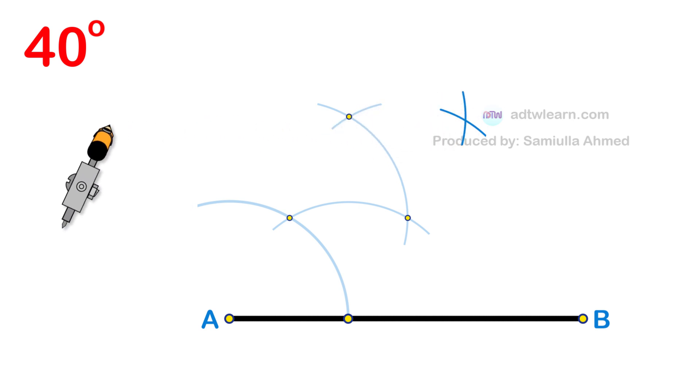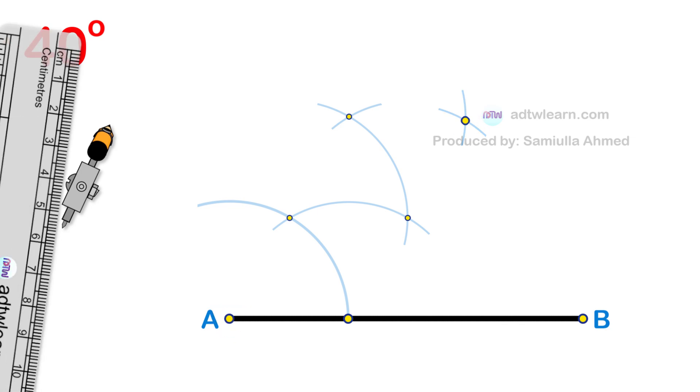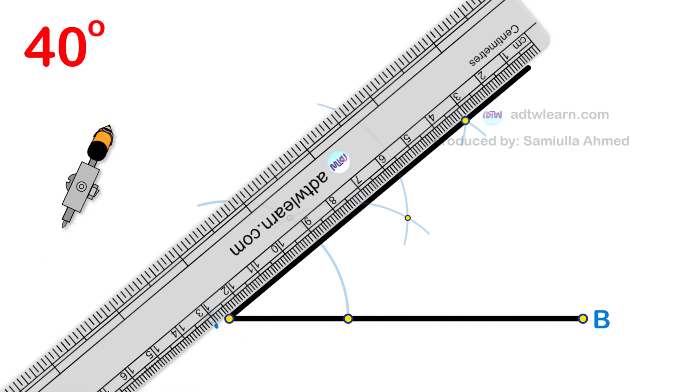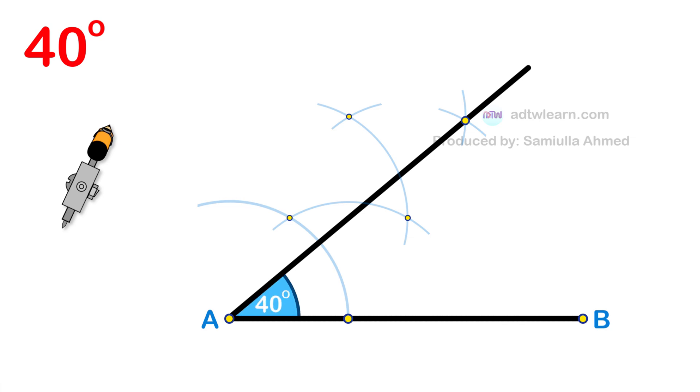In the end, draw a line passing through this intersection point from endpoint A of the line segment. This will be the required 40 degree angle.